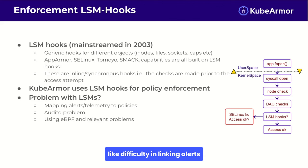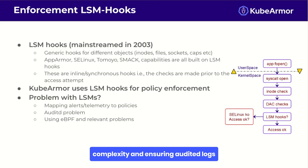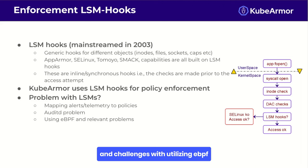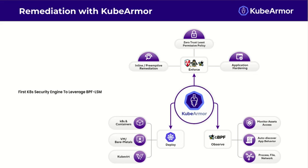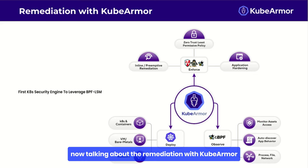There are multiple challenges with LSMs themselves, including difficulty in linking alerts and telemetry data to specific policies, complexity in ensuring audit logs work securely reflecting policy enforcement, and challenges with utilizing eBPF for monitoring and enforcement despite its powerful capabilities. By leveraging LSM hooks, KubeArmor provides robust policy enforcement and enhances the security of Kubernetes clusters.